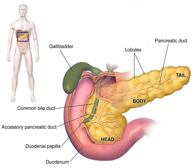The pancreas is an organ of the digestive system and endocrine system of vertebrates. In humans, it is located in the abdomen behind the stomach and functions as a gland. The pancreas is a heterocrine gland, having both an endocrine and a digestive exocrine function.